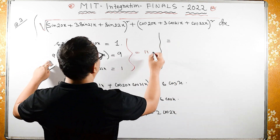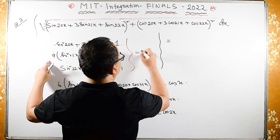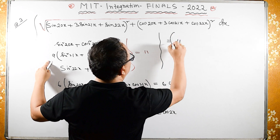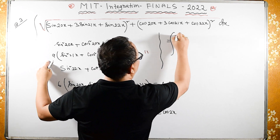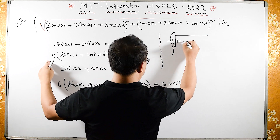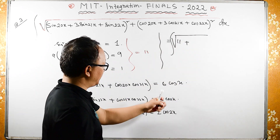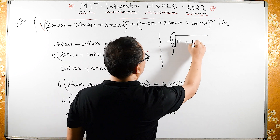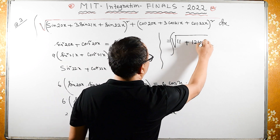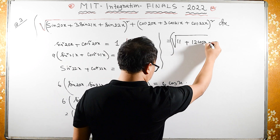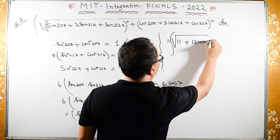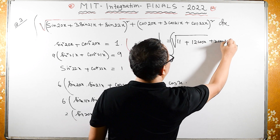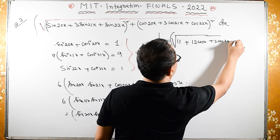Now adding all terms together we have 11 plus 6 plus 6 equals 11 plus 12 cos(x). We then get the square root of 11 plus 12 cos(x) plus 2 cos(2x).